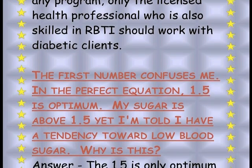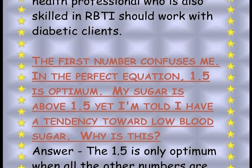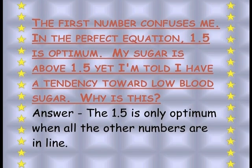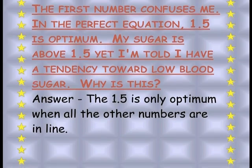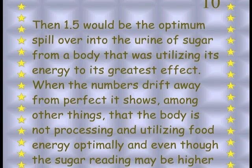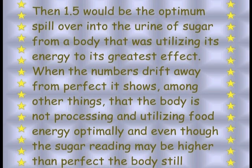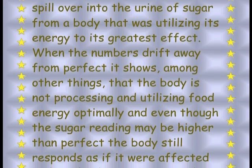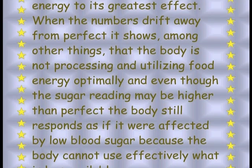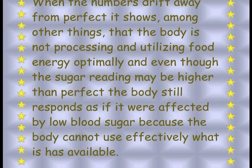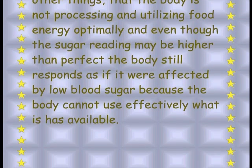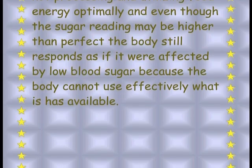The first number confuses me. In the perfect equation, 1.5 is optimum, yet my sugar is above 1.5 and I'm told I have a tendency towards low blood sugar. Why? The 1.5 is only optimum when all the other numbers are in line. If all the other numbers were in line, then 1.5 would be the optimum spillover of sugar into the urine from a body utilizing its energy to greatest effect. When the numbers drift from perfect, it shows the body is not processing and utilizing food energy optimally. Even though the sugar reading may be higher than perfect, the body still responds as if affected by low blood sugar because it simply cannot effectively use what it has available.